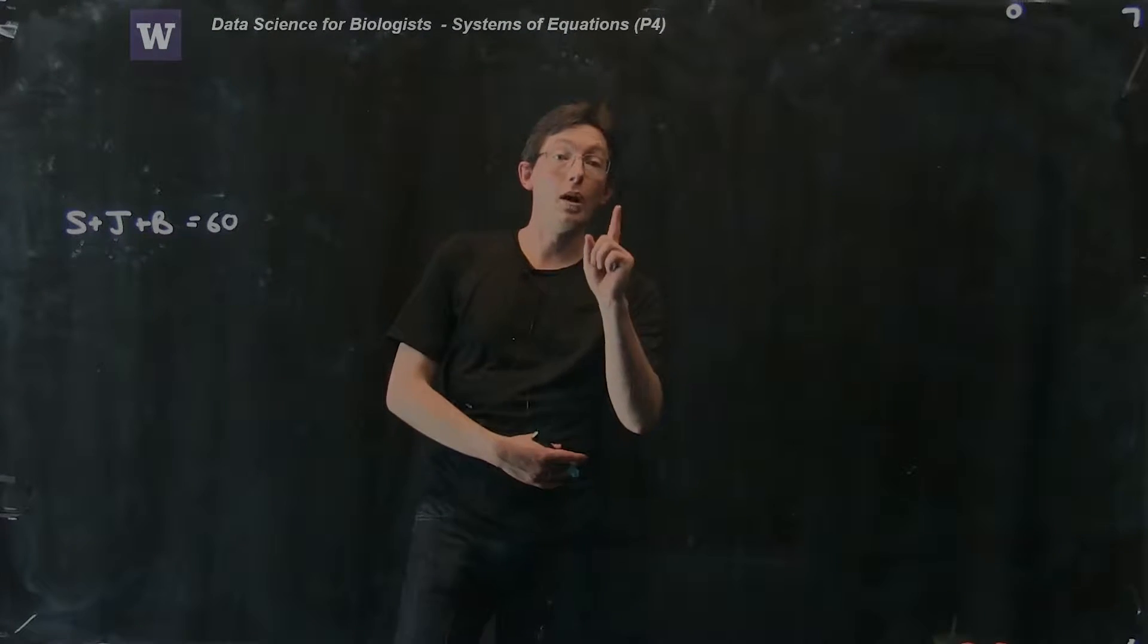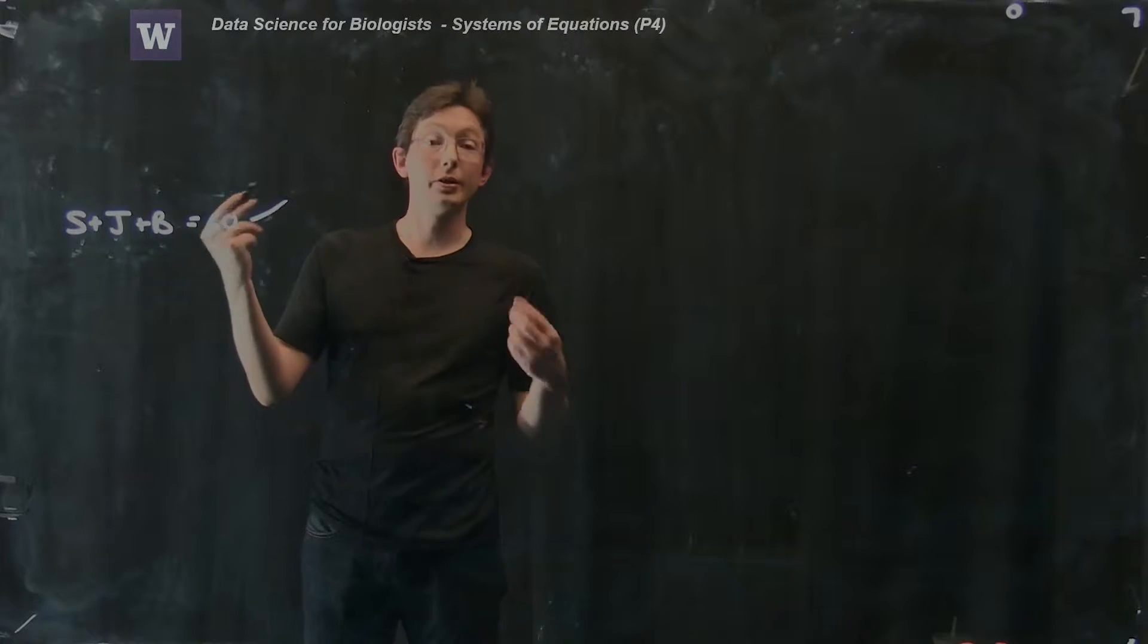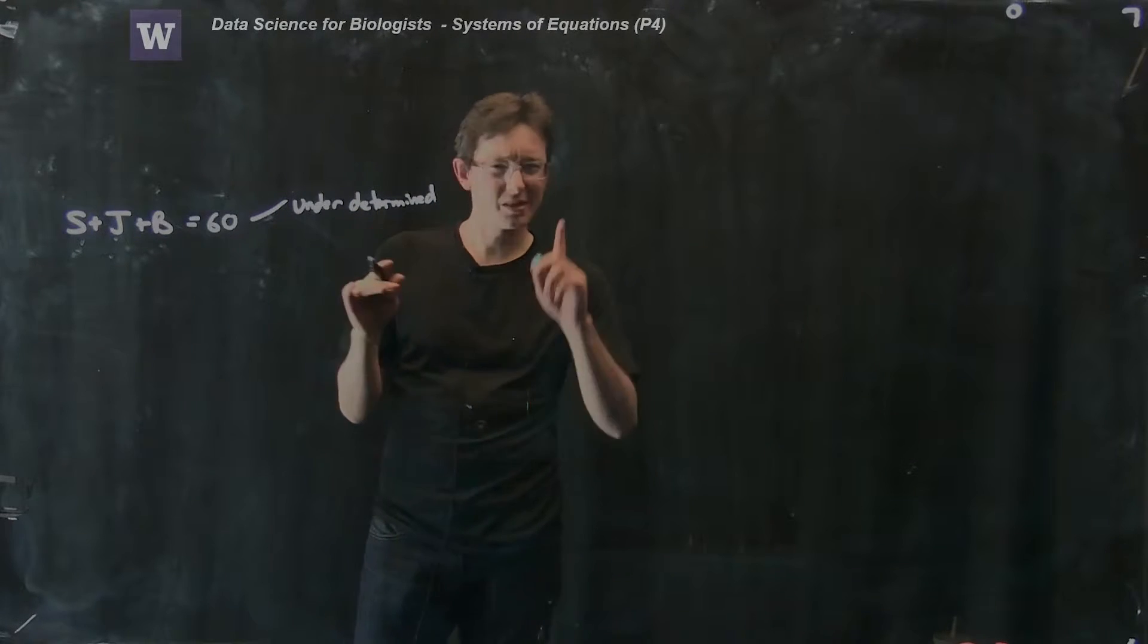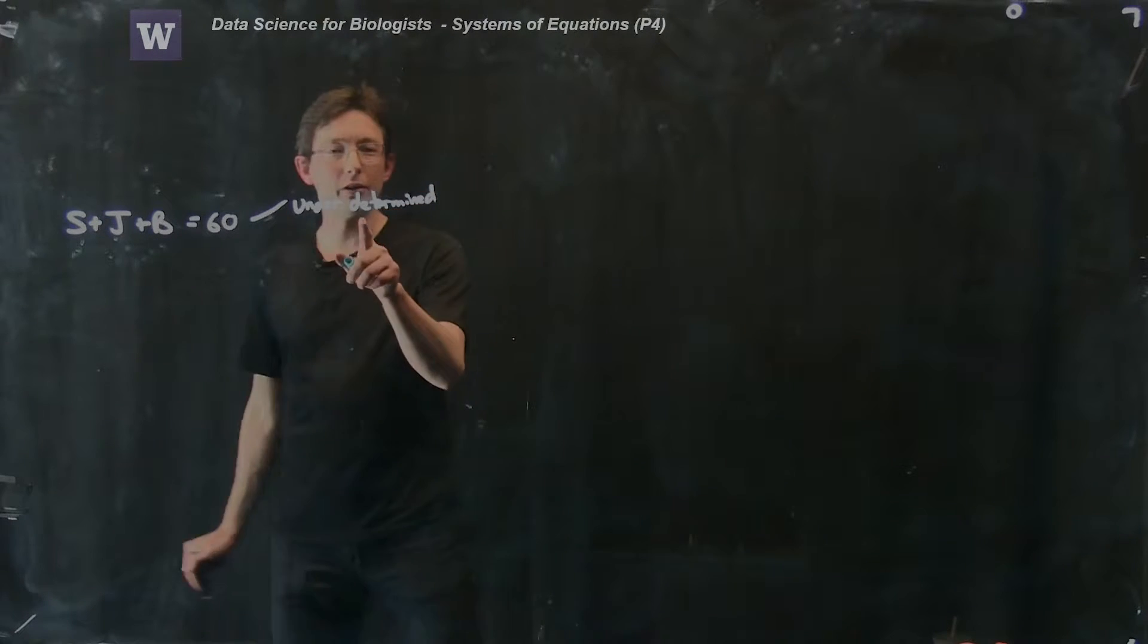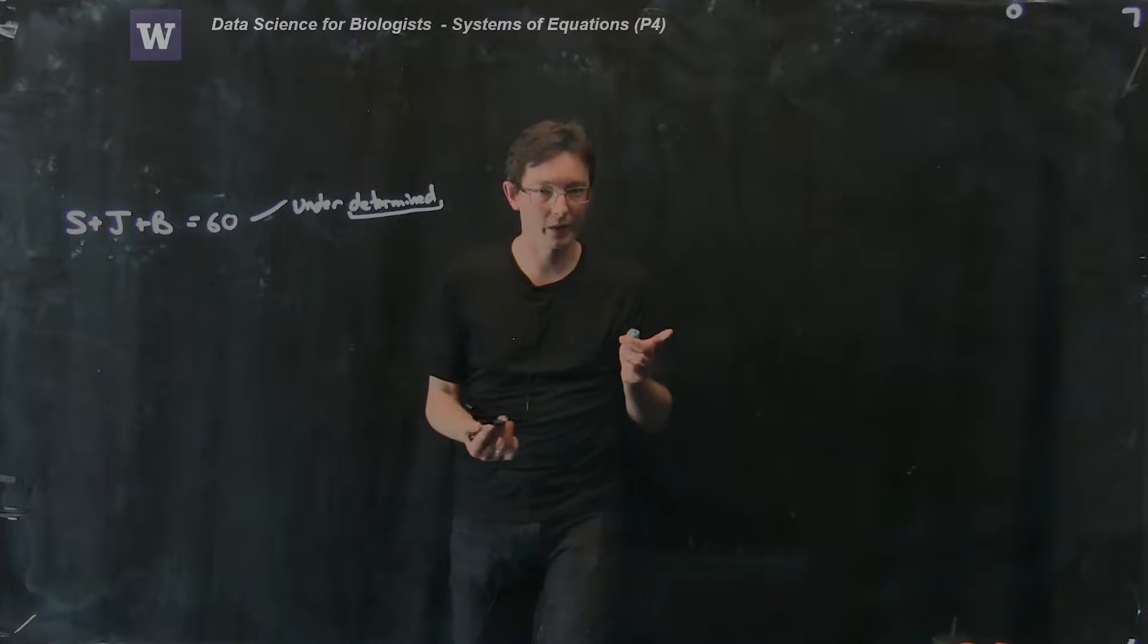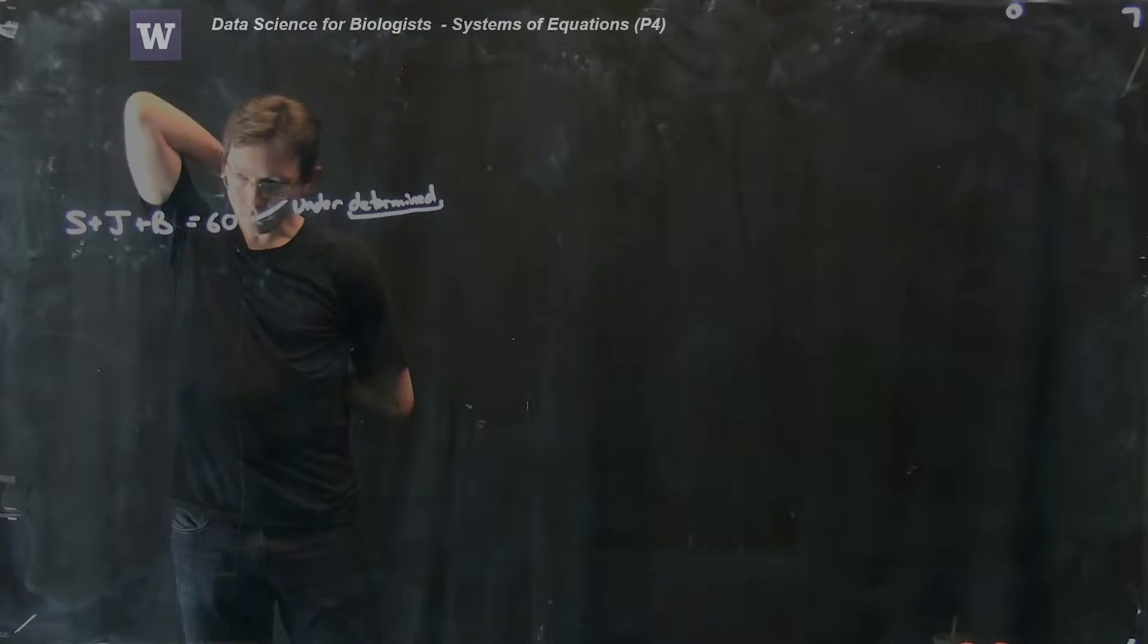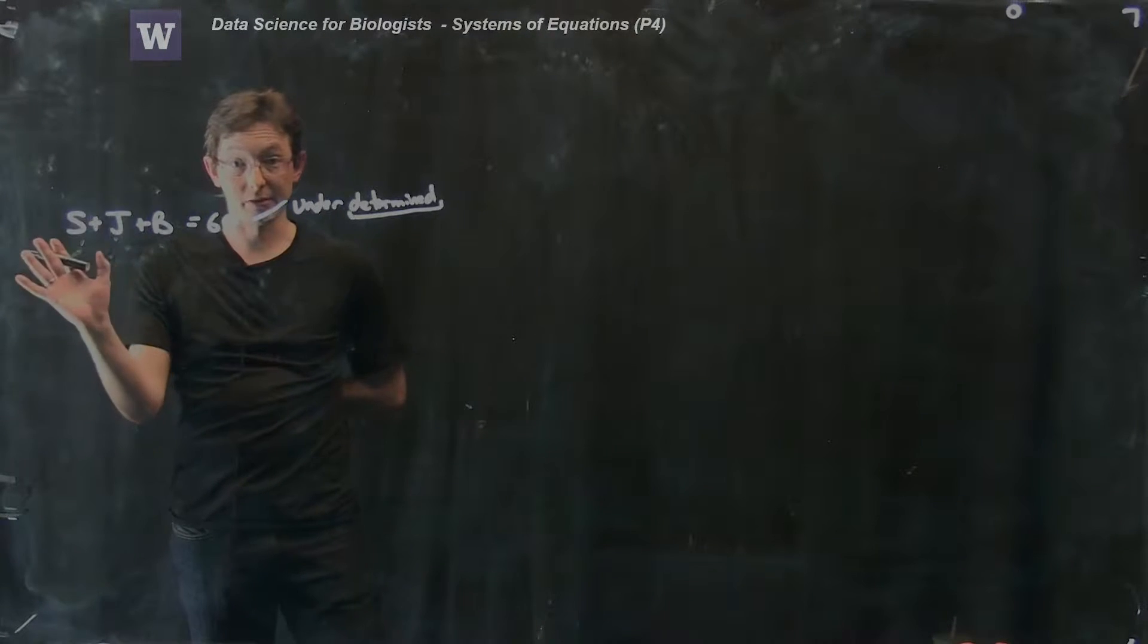So if I only have one equation and three unknowns, this is an under-determined system. Under-determined means I don't have enough information to determine a solution. And you should notice that determined starts to sound a lot like determinant.